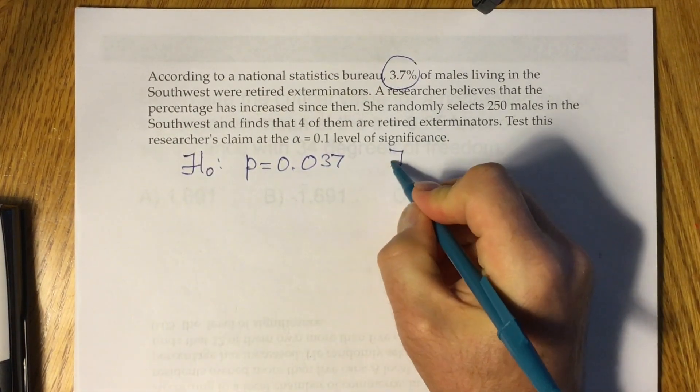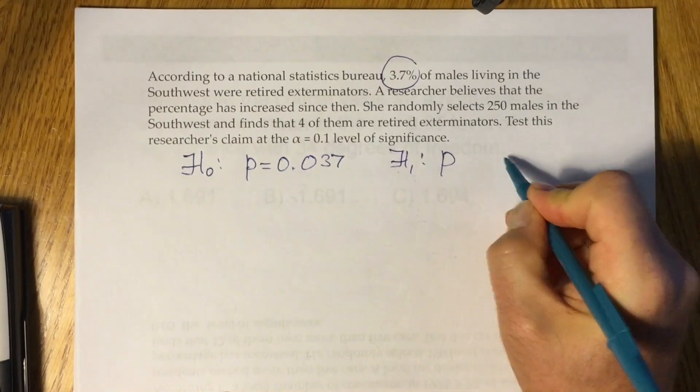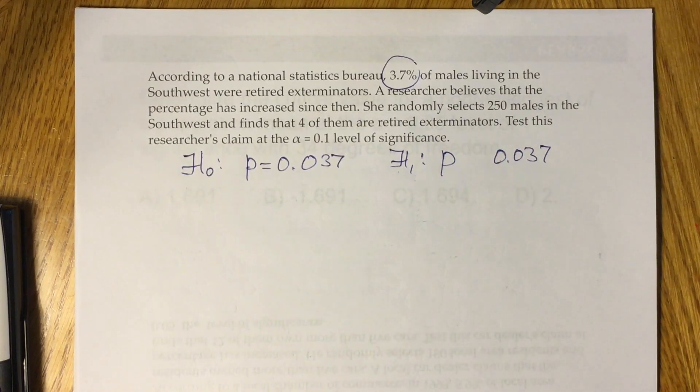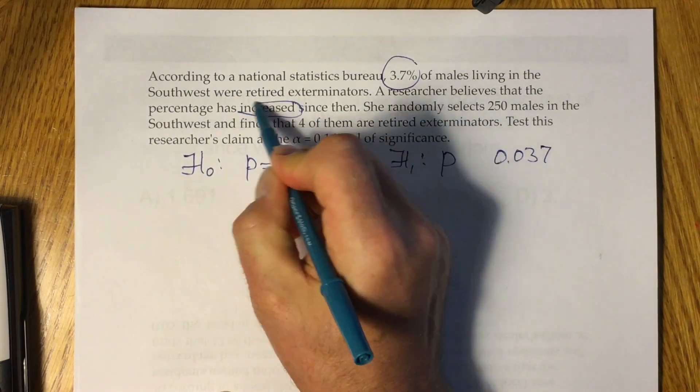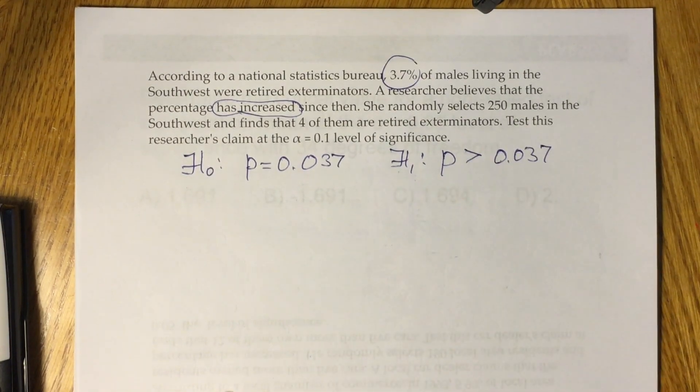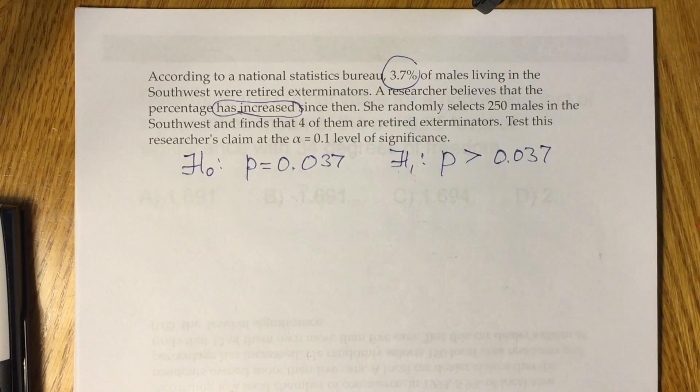Now what sign do we have to pick up in alternative hypothesis? We have the same parameter, the same number, the only thing we have to care about is picking the appropriate sign. We have to look at keywords in the condition of the problem. Here we have 'has increased.' Has increased means becomes bigger. So we have to put greater than sign in our alternative hypothesis.